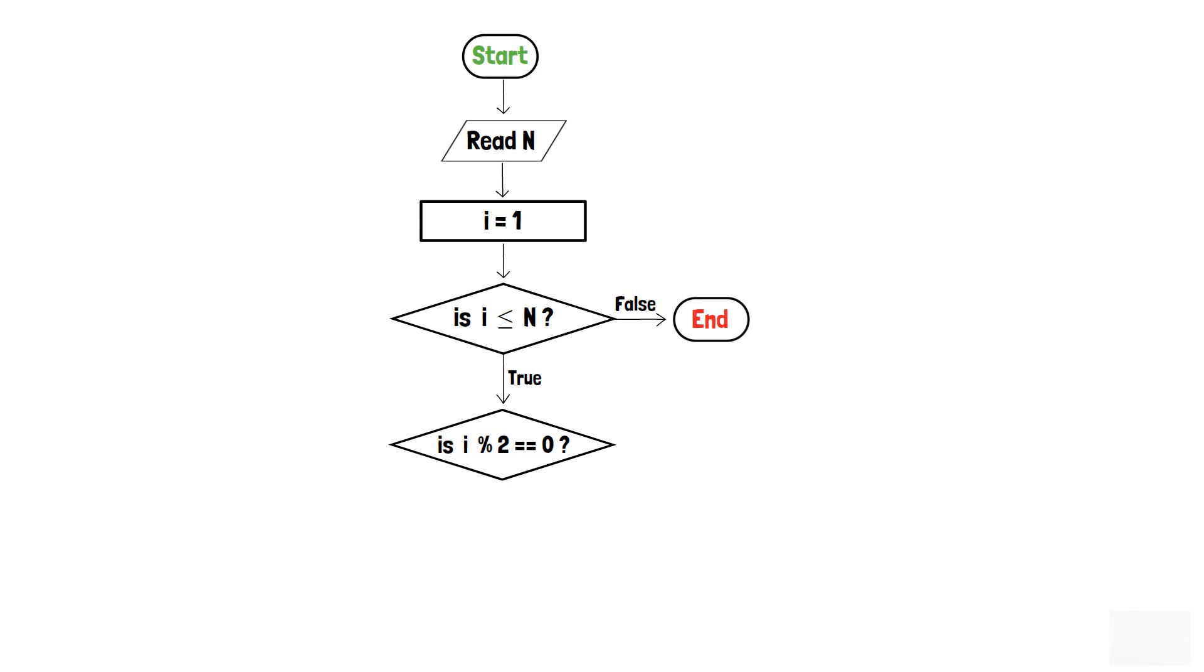If i modulo 2 is not equal to 0, that means the number i is not even. And hence, we will increment i by 1 using a process box.